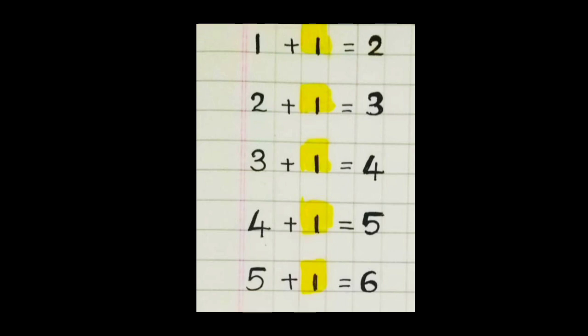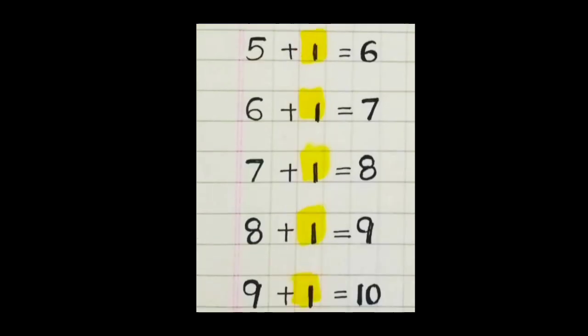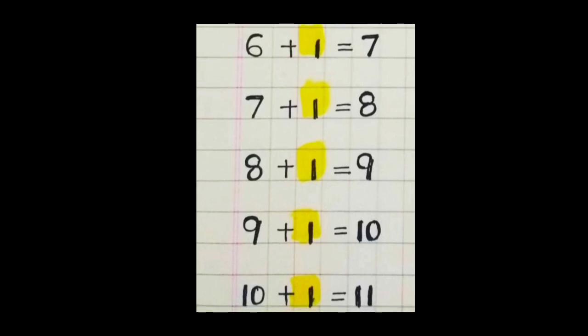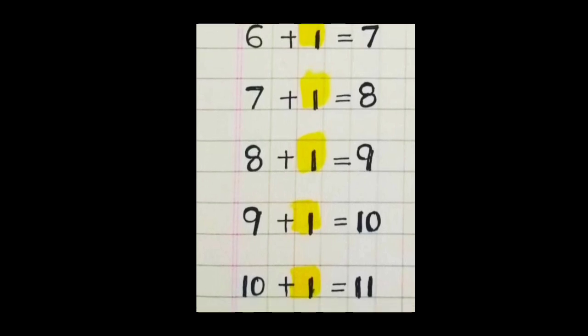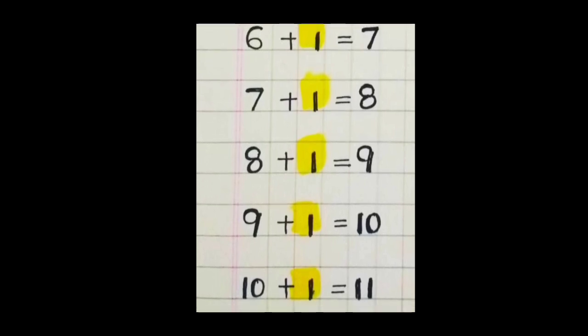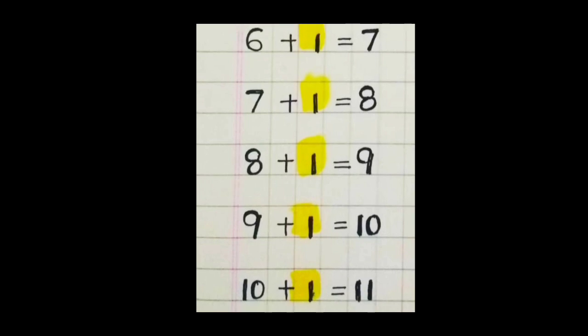Step two. We can say a little more faster. One plus one, two. Two plus one, three. Three plus one, four. Four plus one, five. Five plus one, six. Six plus one, seven. Seven plus one, eight. Eight plus one, nine. Nine plus one, ten. Ten plus one, eleven.